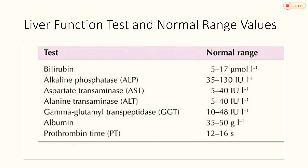Among them, the SGOT and SGPT, which we call as aspartate transaminase and alanine transaminase, are the most important, and their normal range is between 5 to 40 international units per litre. The bilirubin normal levels range from 5 to 17 micromoles per litre, and alkaline phosphatase ranges between 35 to 130 international units per litre. Above or below the range would show that there is something abnormal about the liver function.